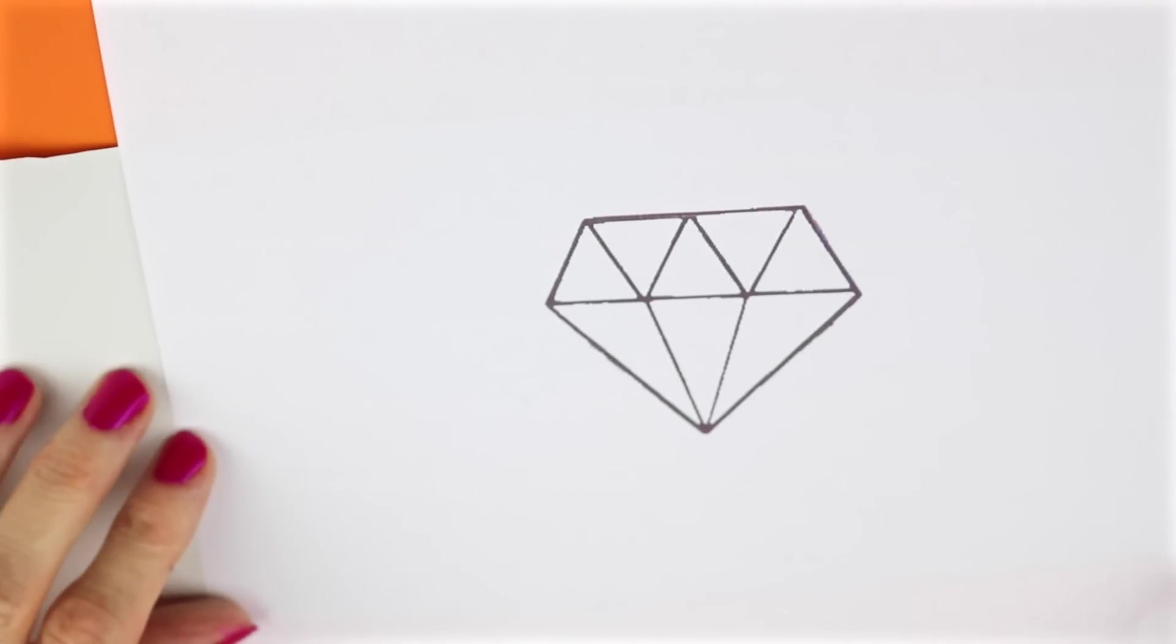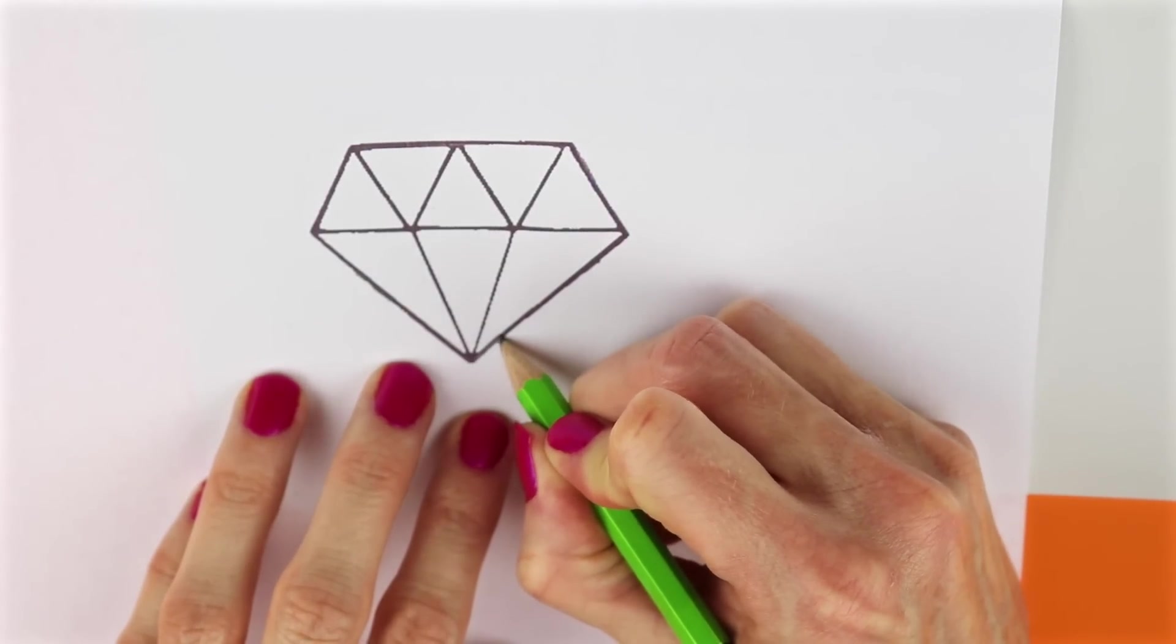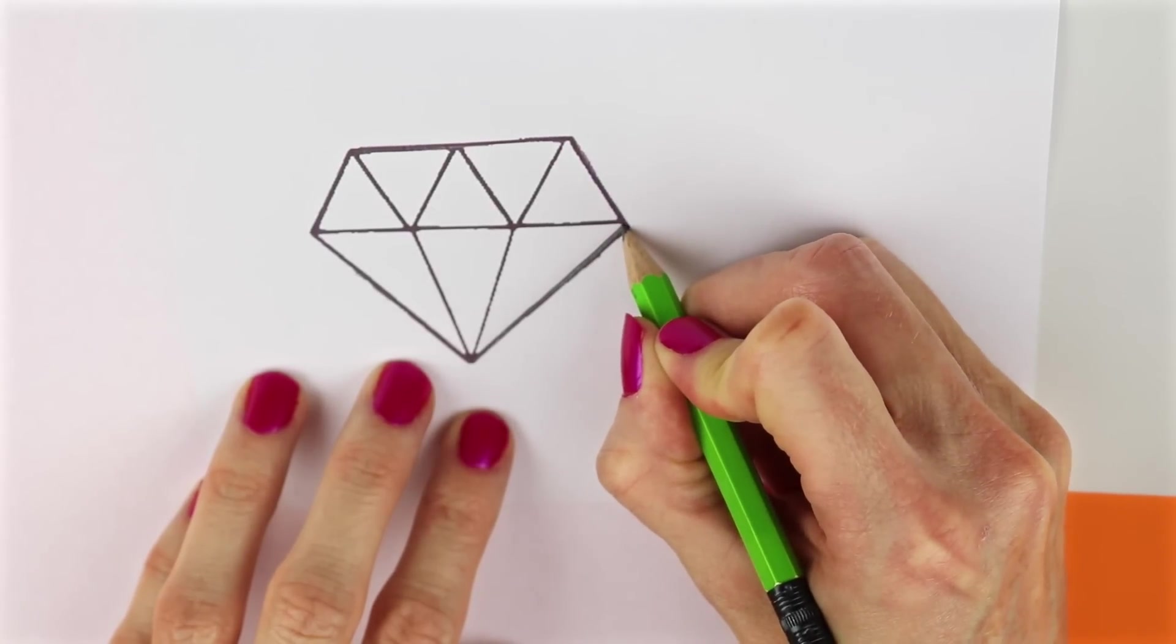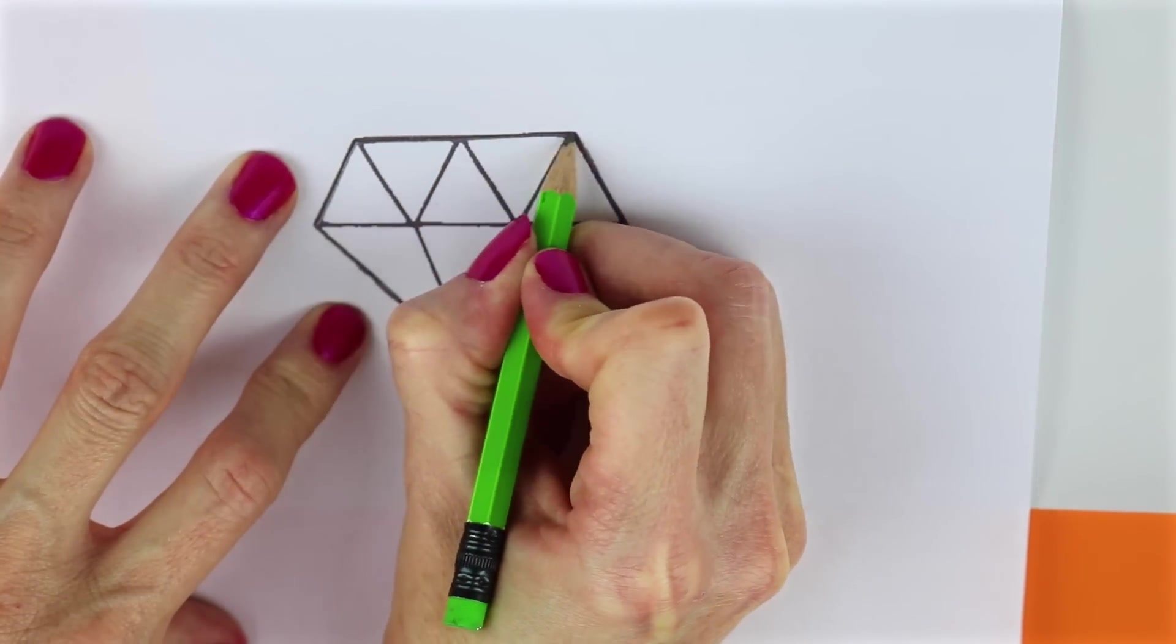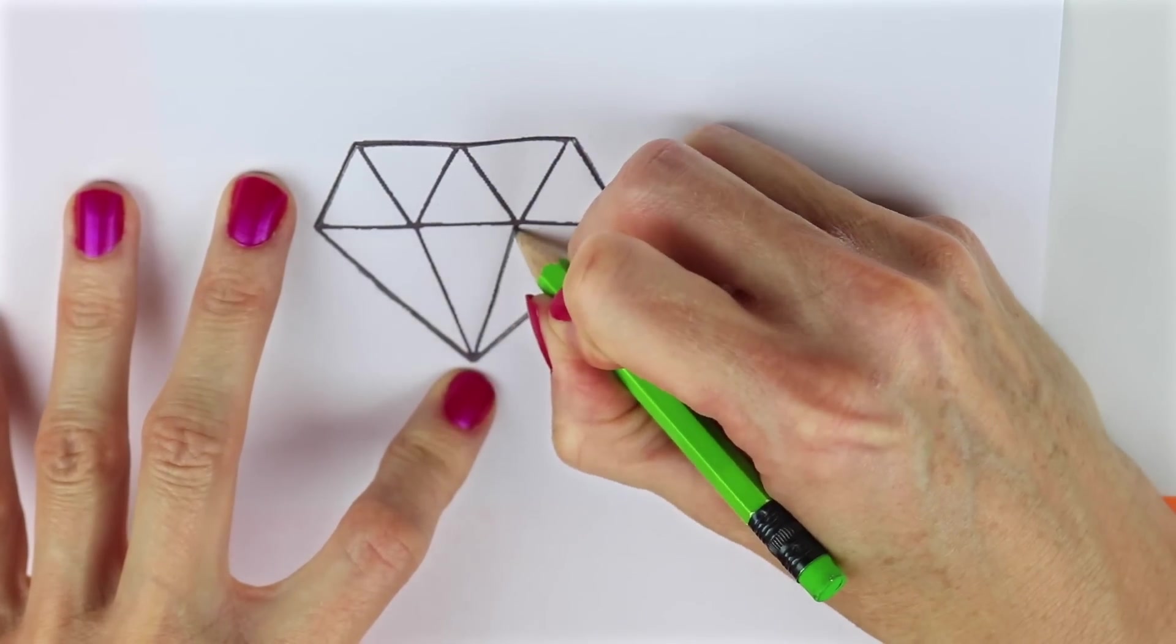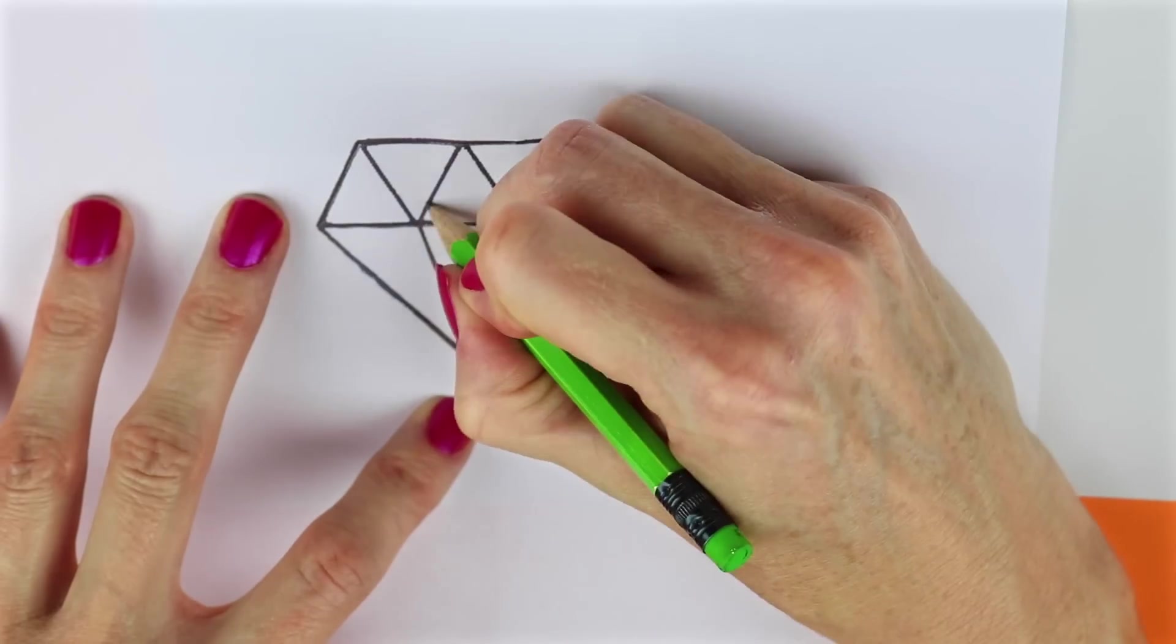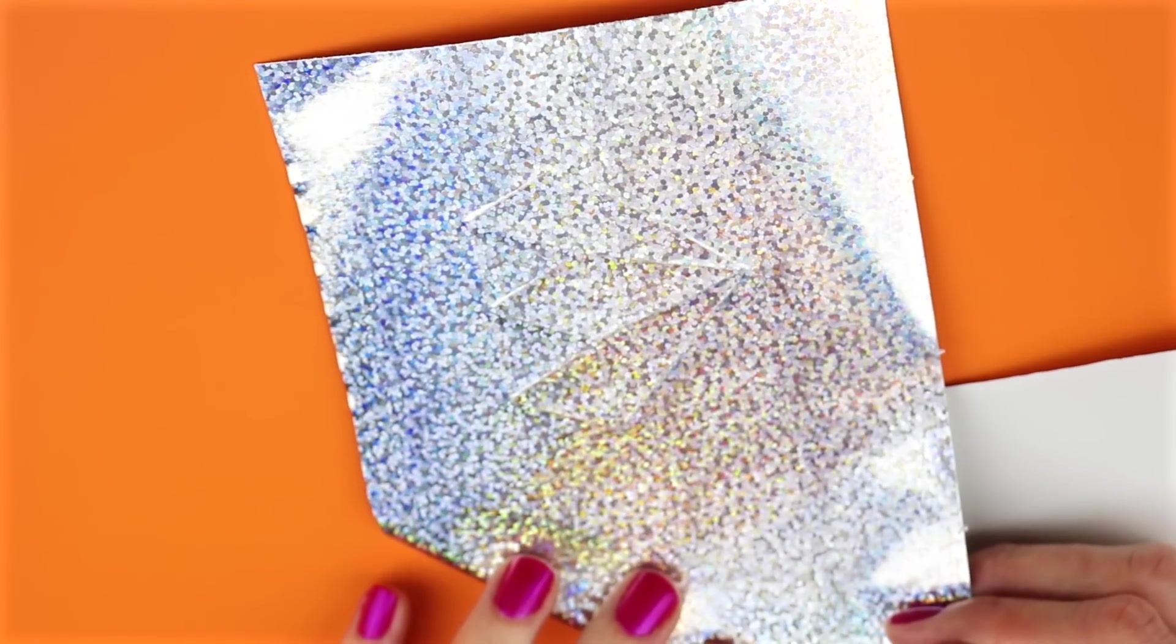Place the gift wrap face down and then take the image, place that on top. And then with a pencil, kind of hard, you want to press on all the lines of the diamond. You don't want to press so hard that it rips the gift wrap underneath. And here is what it does. It gives you the lines of the diamond on the right side of the gift wrap.